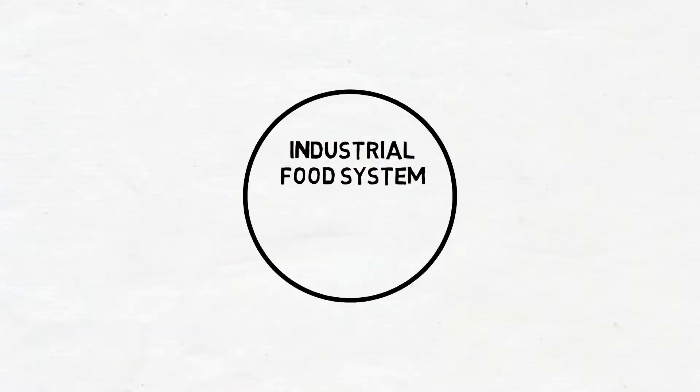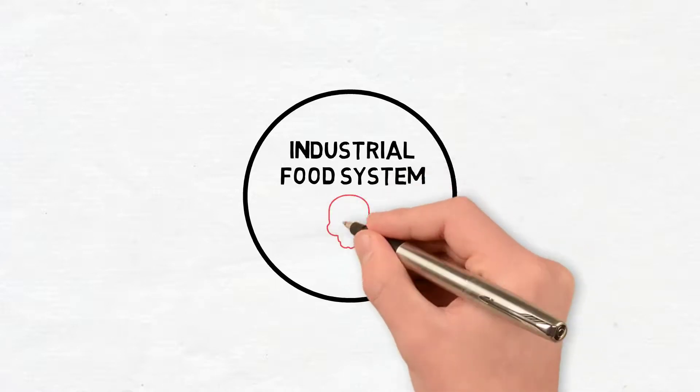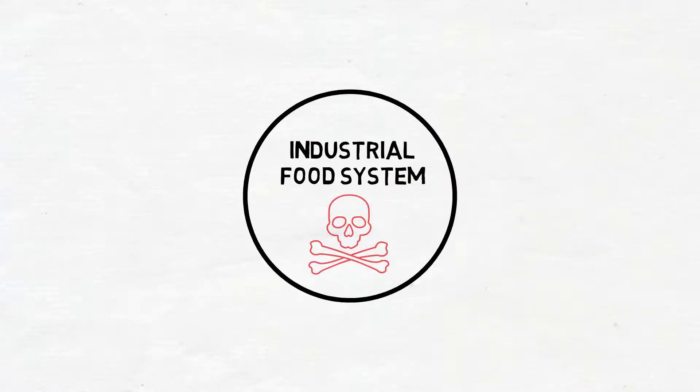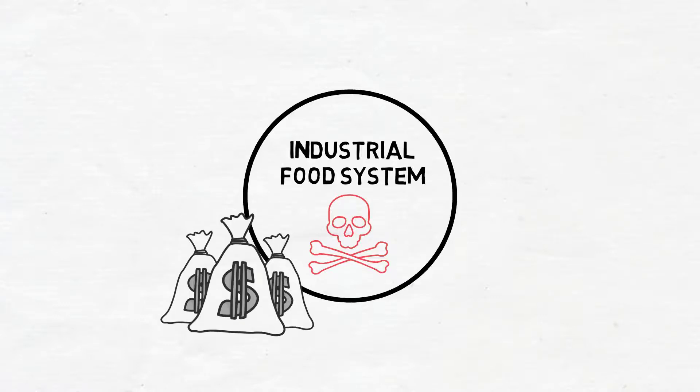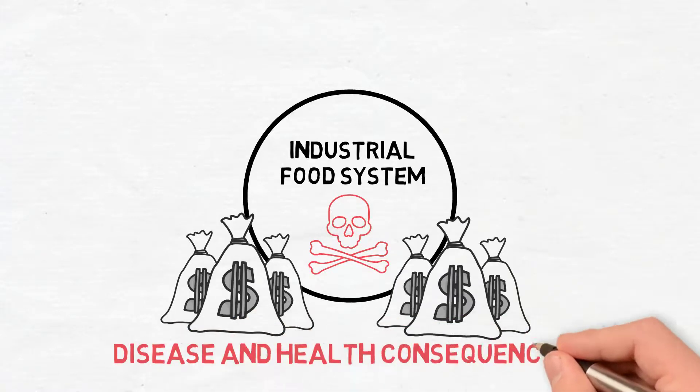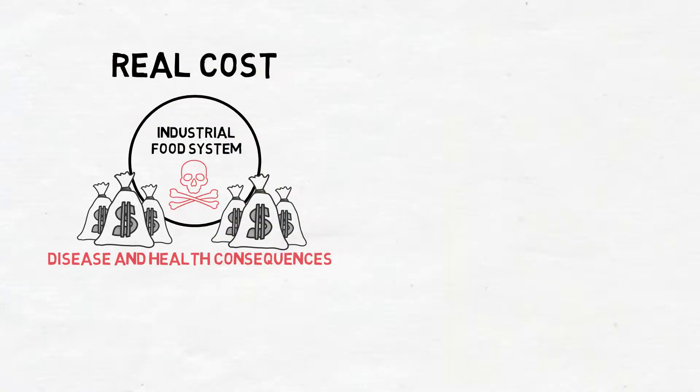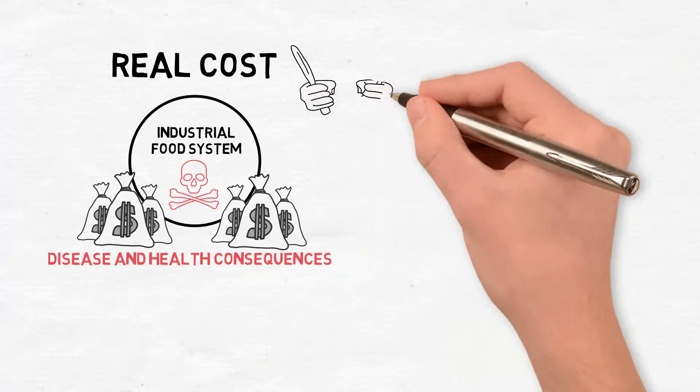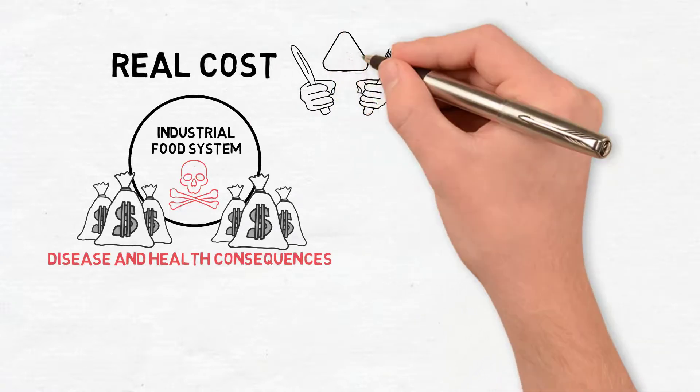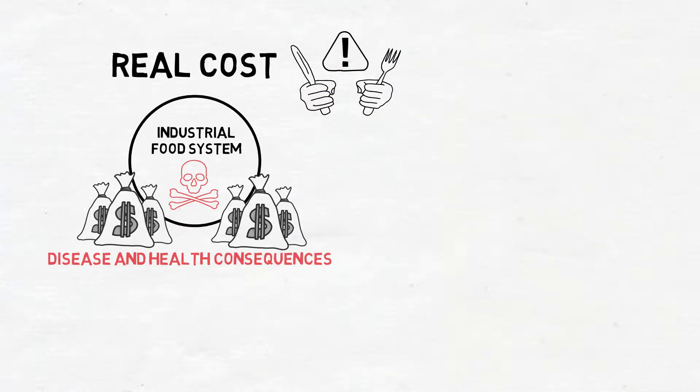The biggest externality we've got at the moment in our industrial food system is the fact that it's actually toxic, that it's generating trillions, tens of trillions of dollars of disease and health consequences. And if we put the real cost to those health consequences of this very poor food, the nutritional compromised food that we're marketing...